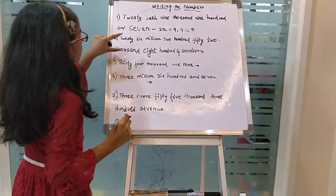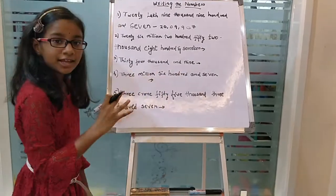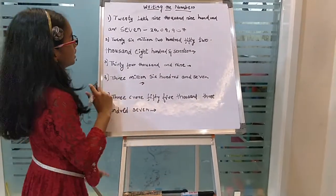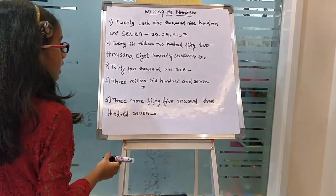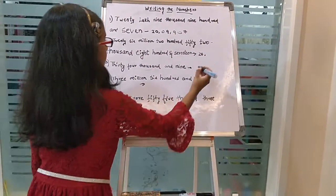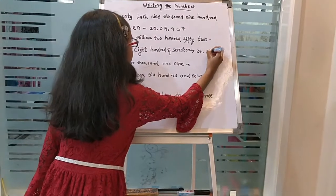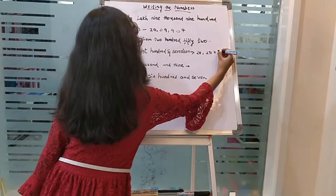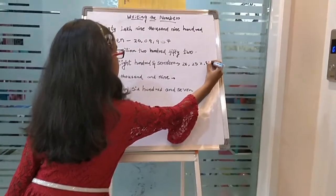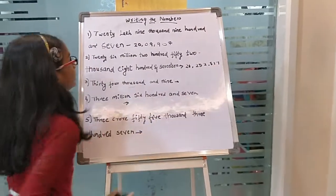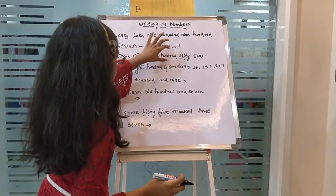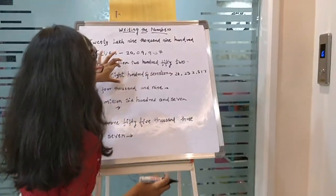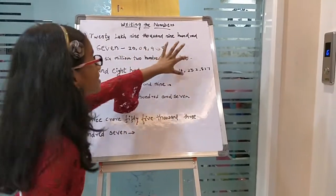So 26 million - if there is million, you know it's international, right? 26 million, 252 thousand, and 817. Find its number.